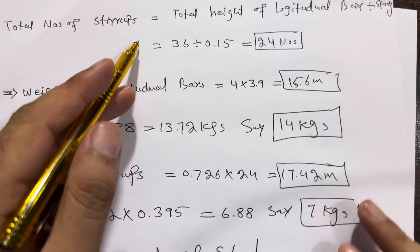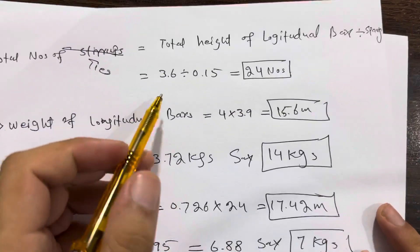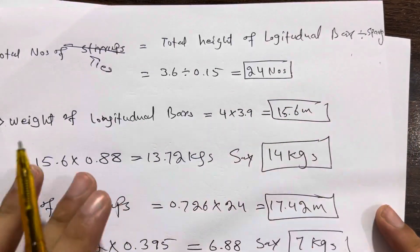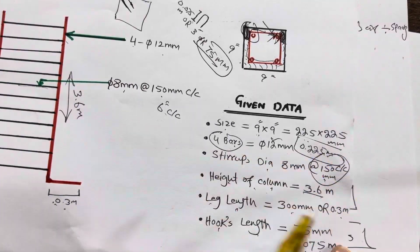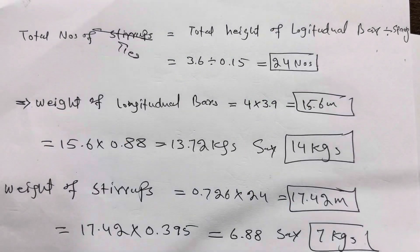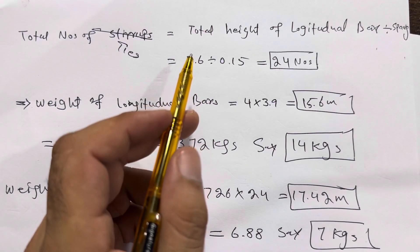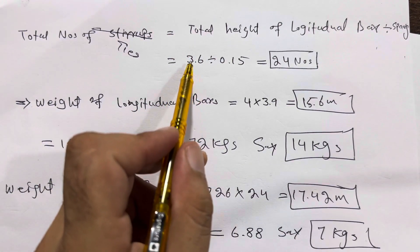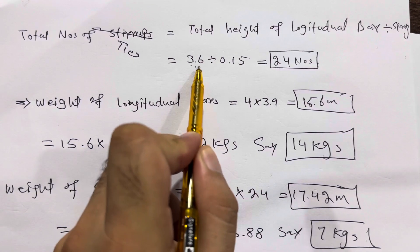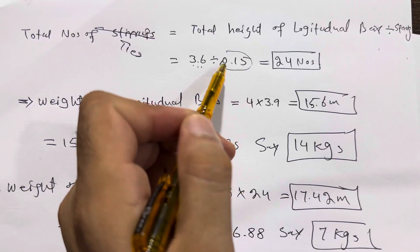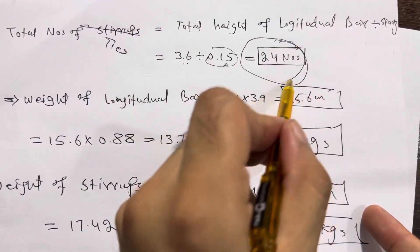Total number of lateral ties equals total height of longitudinal bar divided by spacing. The spacing is 150 millimeter or 0.15 meter. So 3.6 divided by 0.15 gives 24 numbers of lateral ties.